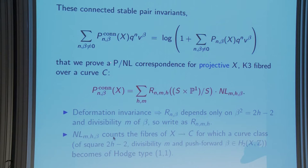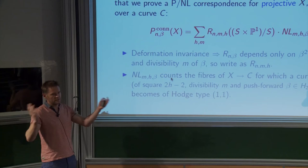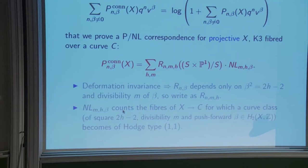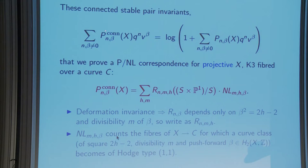We prove a Noether-Lefschetz correspondence. I want to use a global X, not just the twistor geometry, because for the global X I'll have an MNOP conjecture relating it to Gromov-Witten theory. The idea: in a global K3 fibration you can't just talk about classes on one K3 surface because there might be monodromy, so you sum over all classes which push forward to the same class on the threefold. The formula is simple: connected curve counting on a global projective K3 fibration comes from curves locally in the twistor theory, times the number of fibers for which the class becomes of type (1,1).